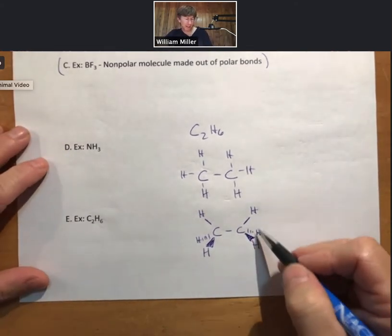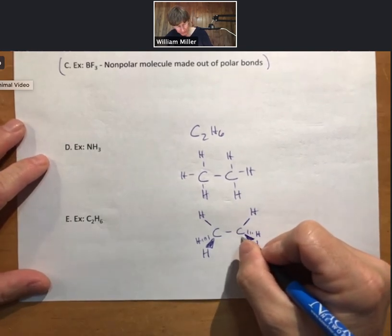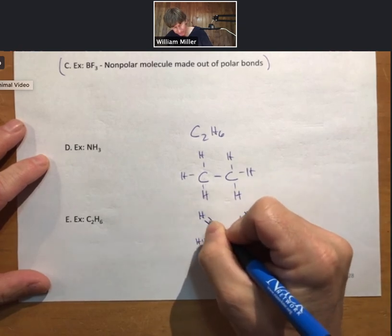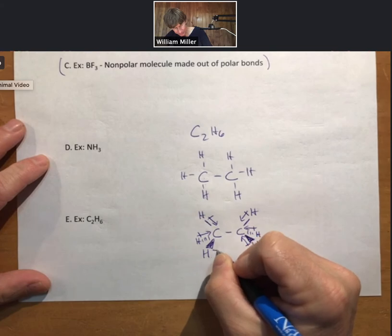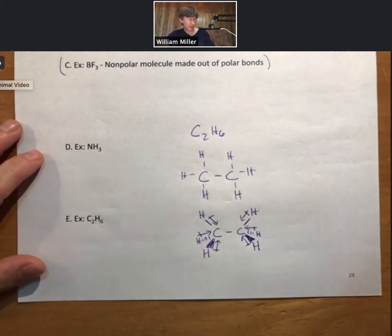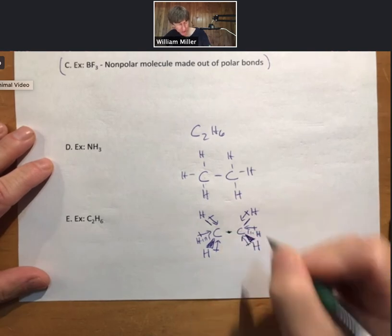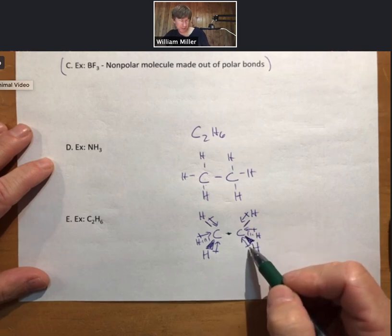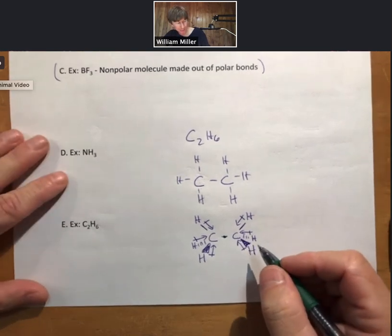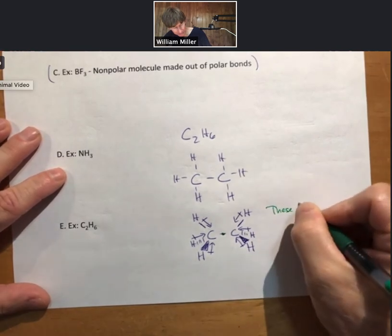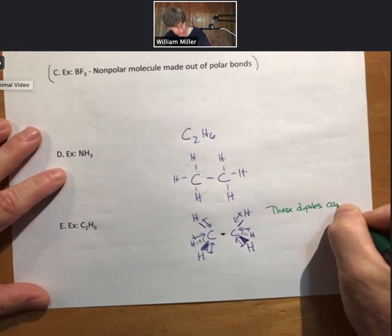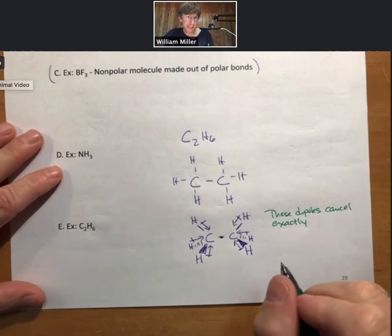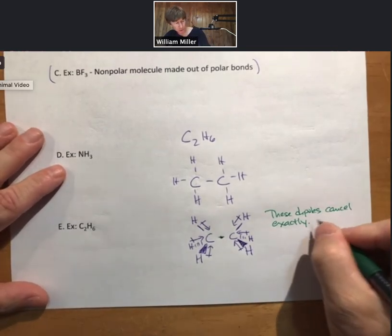Now each of these has a dipole because there are two elements that have different electronegativities. And it turns out that if you look right in the center here, these three arrows are exactly opposite these three arrows. These dipoles do cancel exactly.